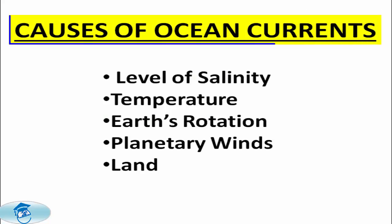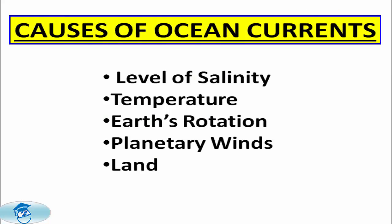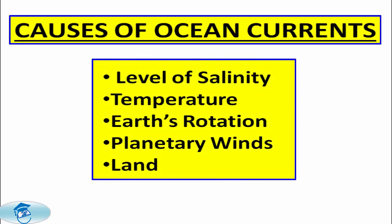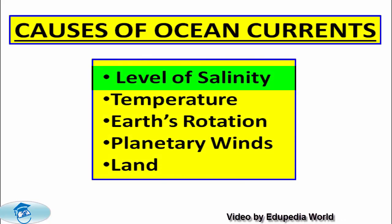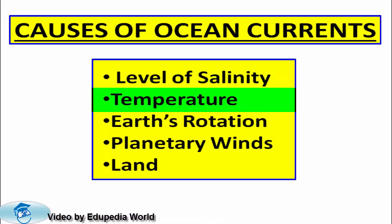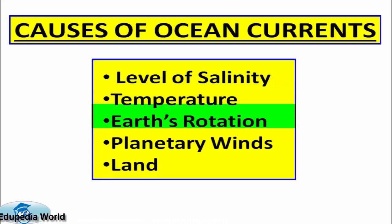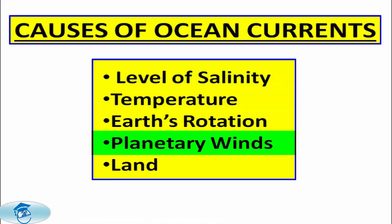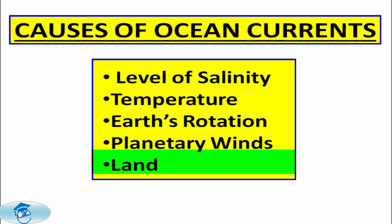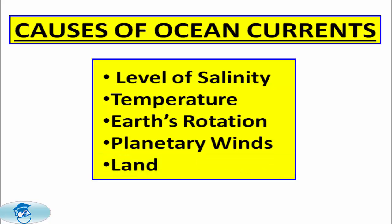The ocean currents have a regular pattern of circulation of water around the oceans. The origin and nature of the movement of currents are related to many factors such as the level of salinity, temperature, Earth's rotation, planetary winds, and land. Let us discuss these features one by one.